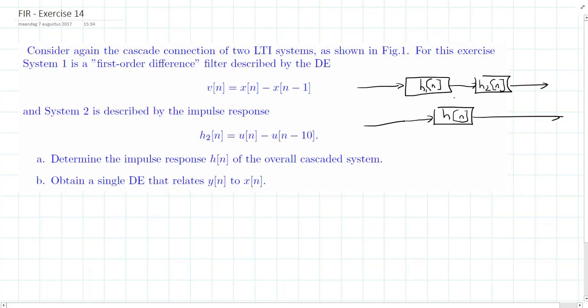The impulse response which makes them equal is in the case that h of n is equal to the convolution sum of h1n, convolution with h2n.